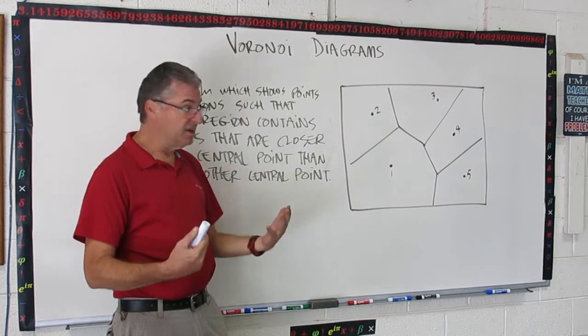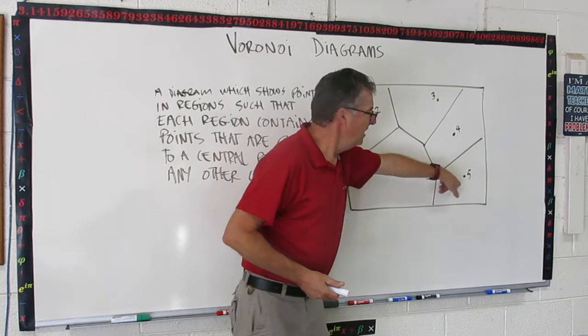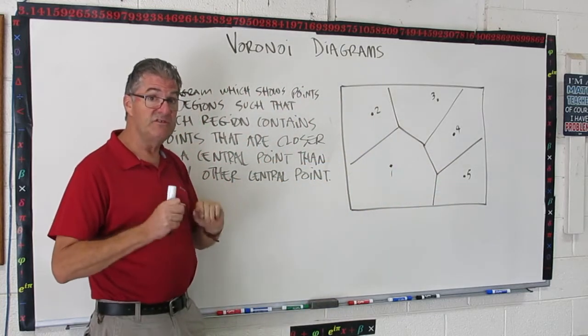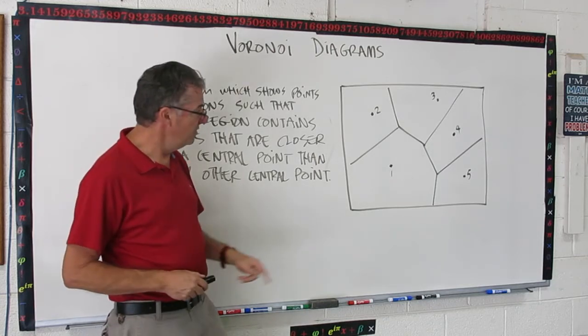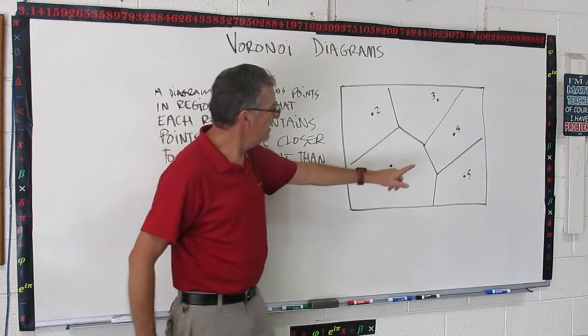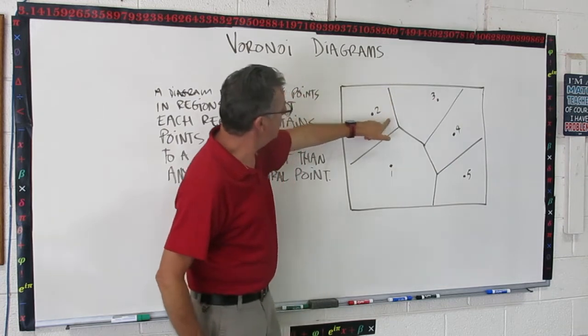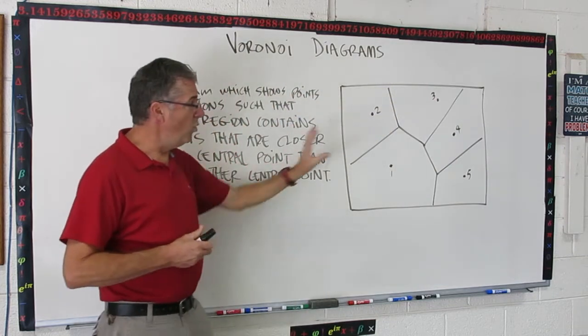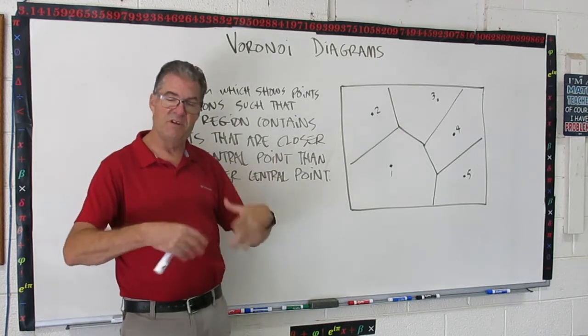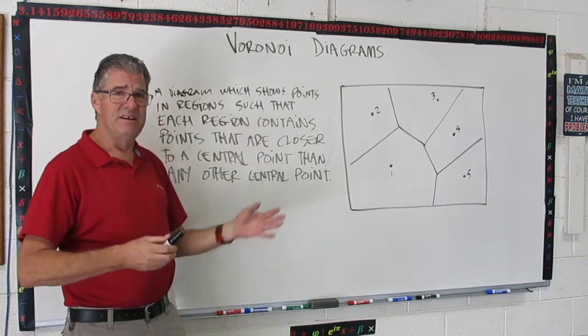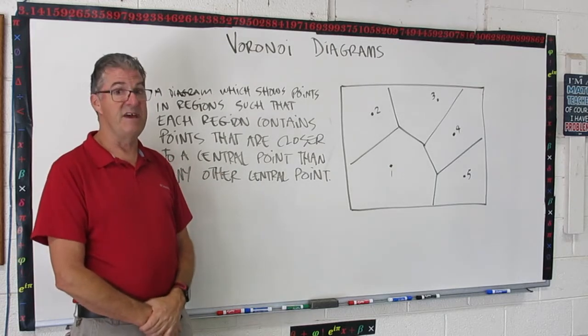All the points in this region are closer to one than any other of these central points in the diagram. Same thing with three. All the points in here are closer to that central point, everything in this region, than they are to any of the other central points. Wow. Okay, so kind of interesting. What's it for? Check this out. This could be hospitals. Each of these are hospitals and this diagram, this map, would be really useful for people who needed to know how to get to the closest hospital. So if you lived here, you would know it's that hospital. If you lived right here, you would know it was hospital four. If you lived right here, you would know it was two and so on. So that's one of the uses of these types of diagrams.